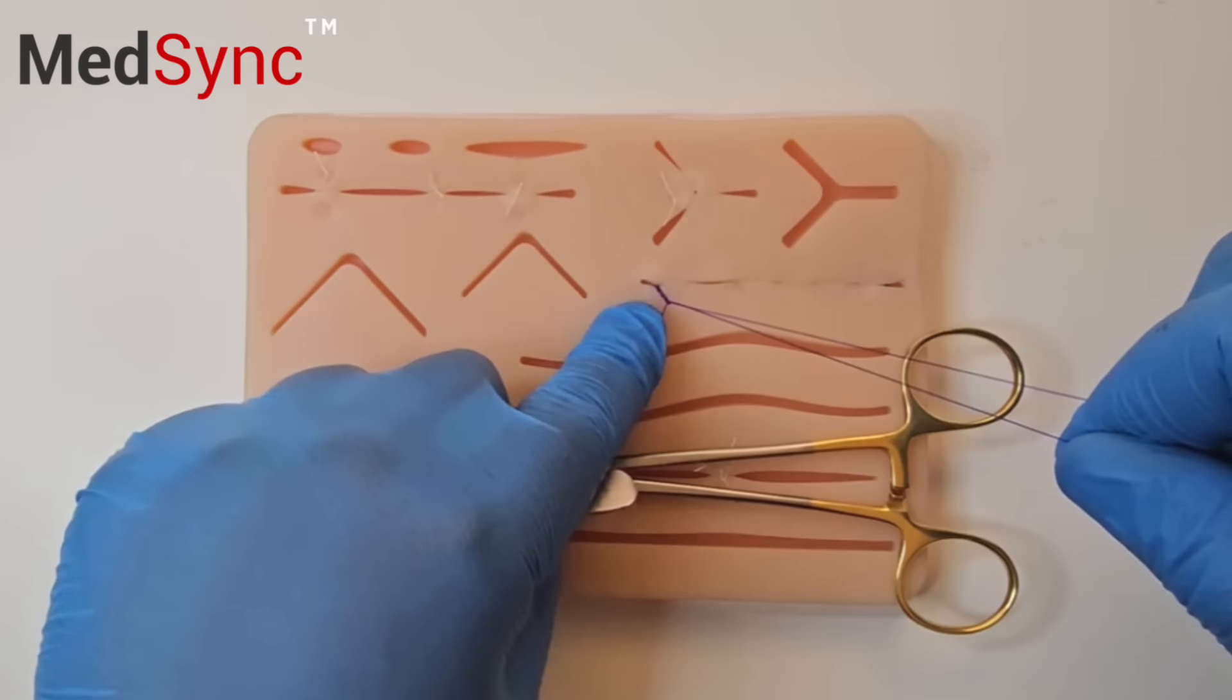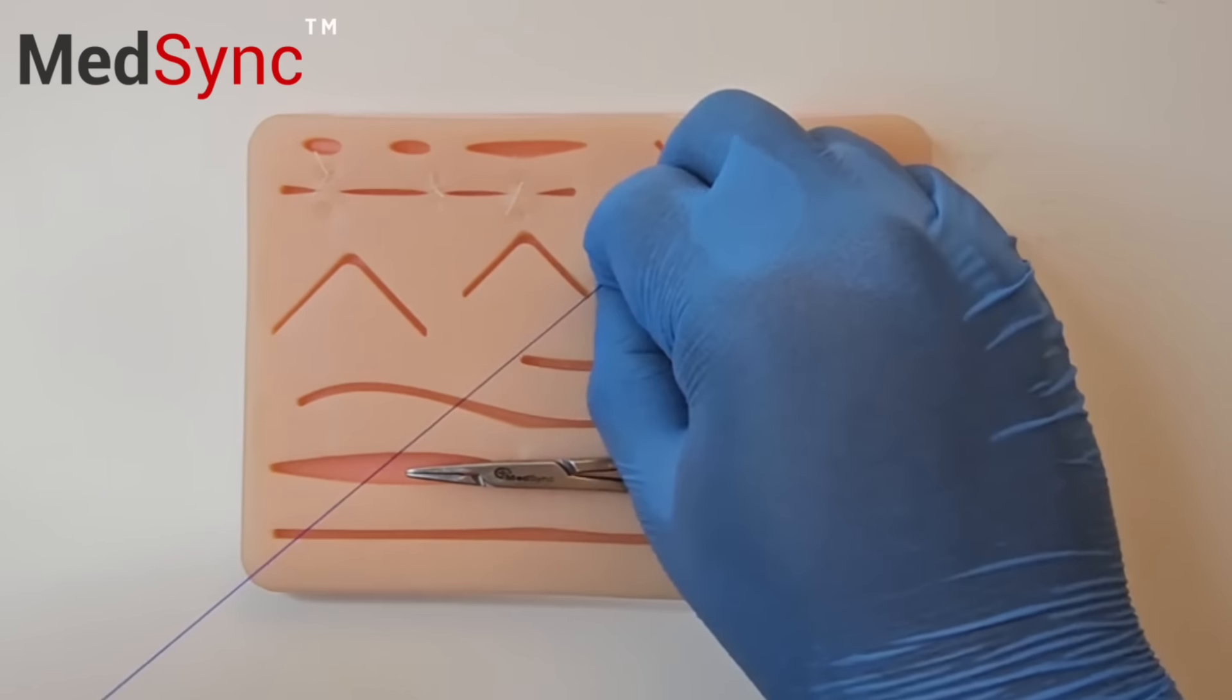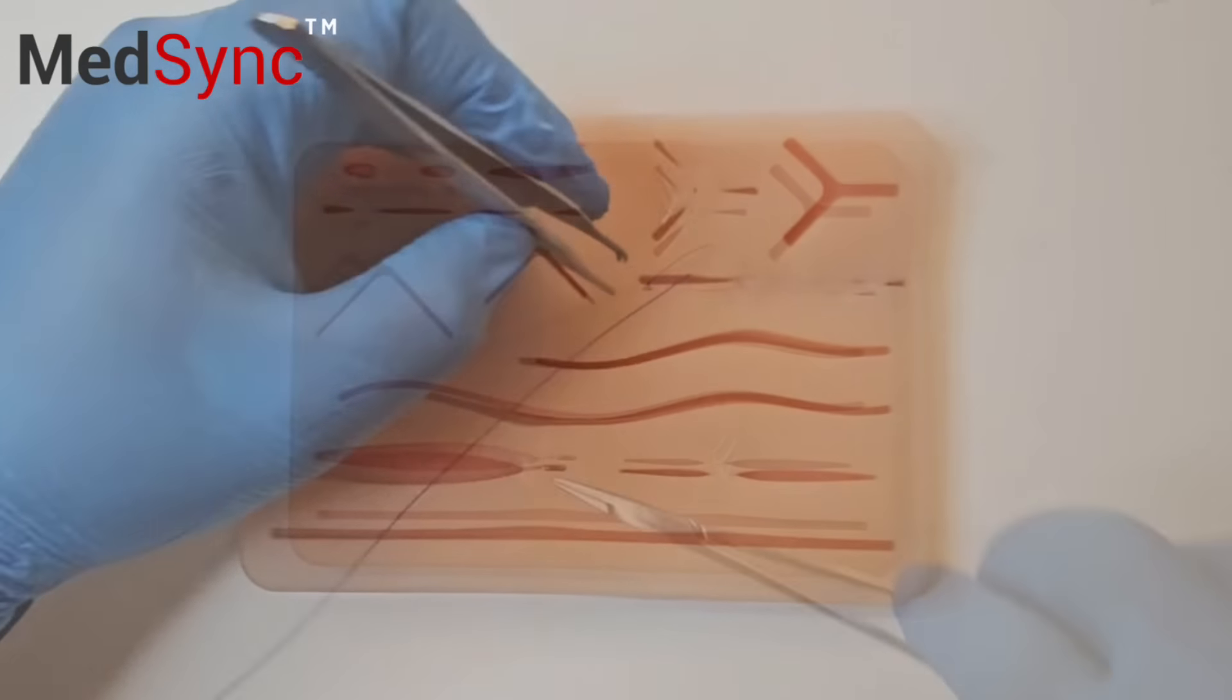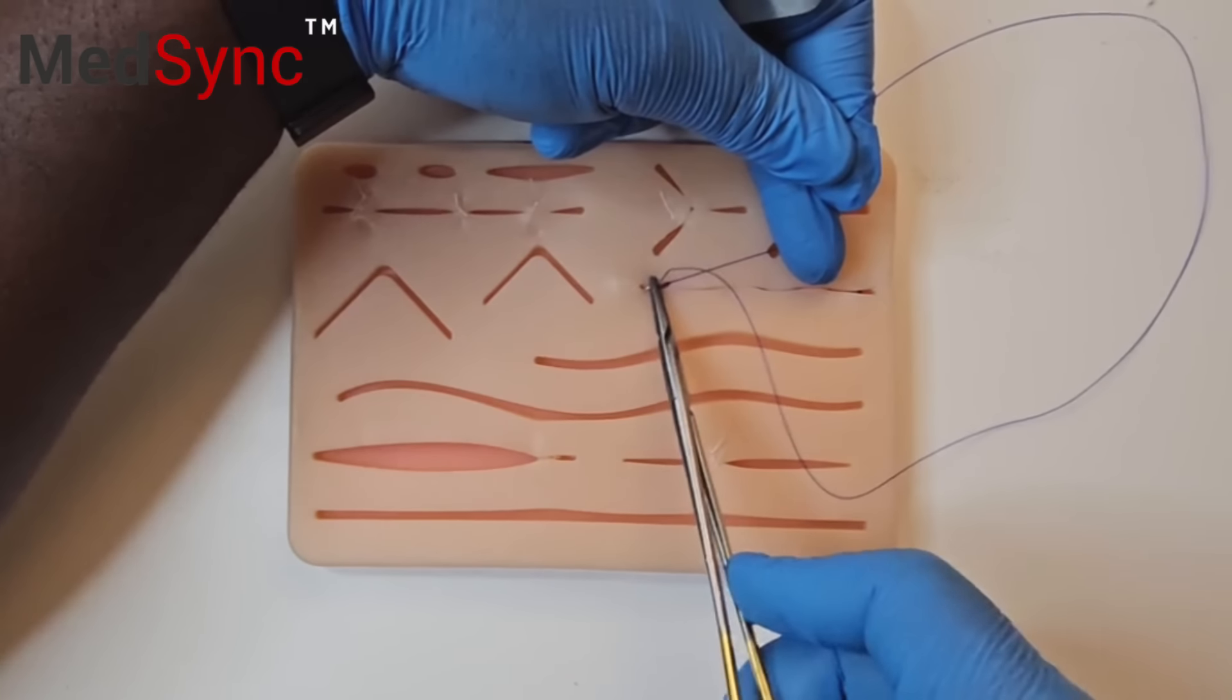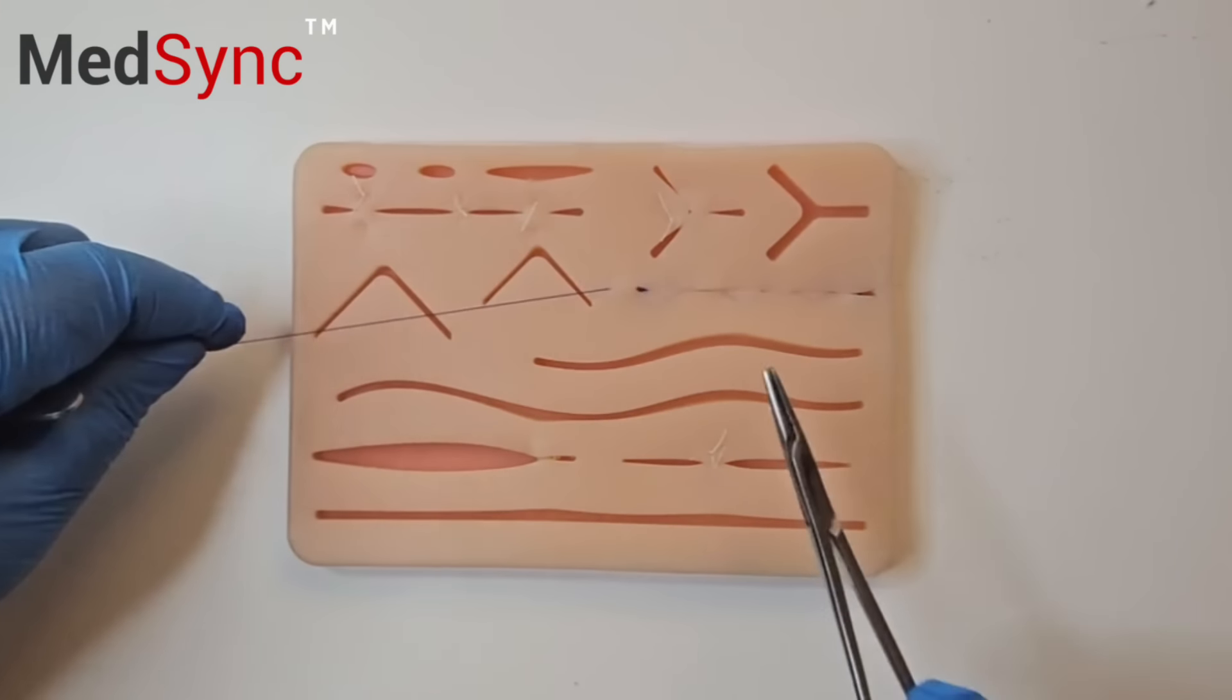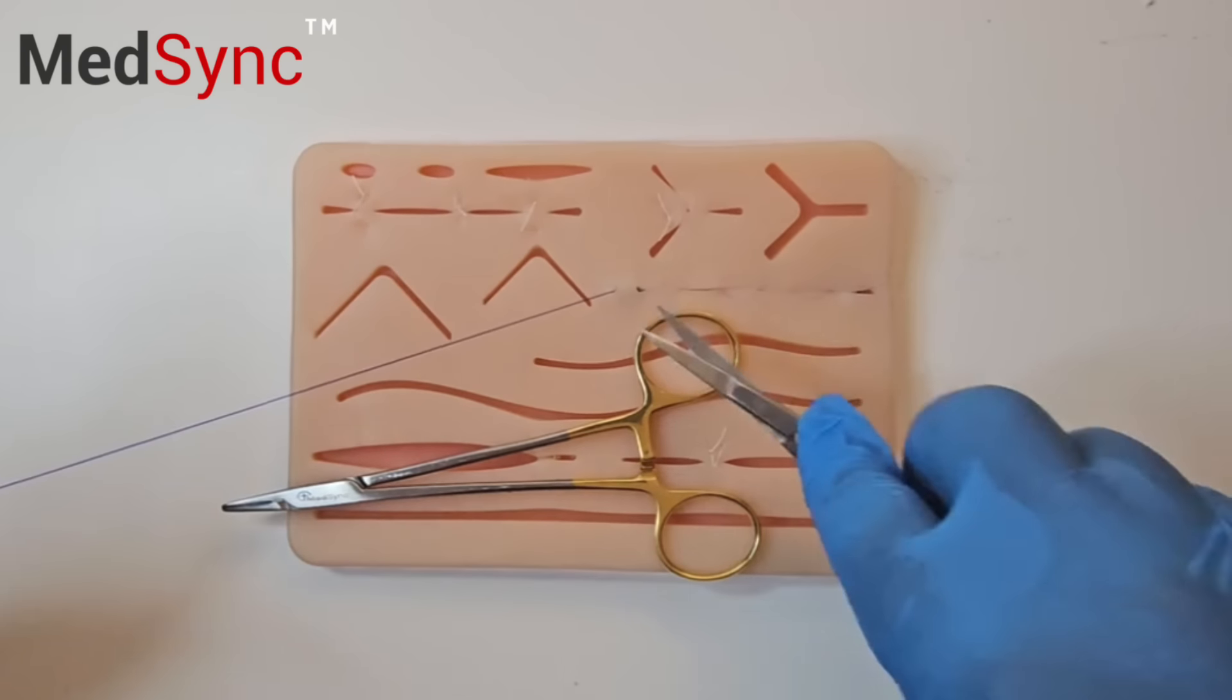Once you've recreated all your knots, bring the needle through the loop. You need to bury the suture. Take a bite in the apex and come out. And cut flush with the skin.